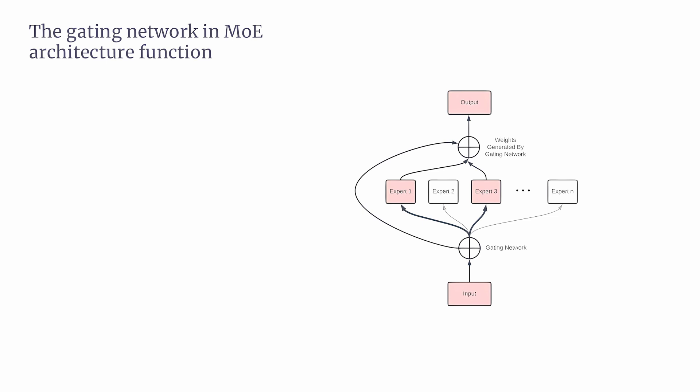How the gating network works. First, scoring the experts: when a new input arrives, the gating network assigns a score to each expert based on how relevant they are to that specific input. For example, if the input is about grammar, an expert specializing in language might get a high score. If the input involves coding, a programming expert might be ranked higher. This scoring helps the model make smarter decisions about which experts to activate.